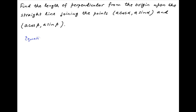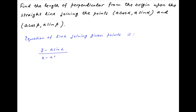The equation of the straight line joining the two given points can be written as y minus a·sin α divided by x minus a·cos α is equal to the gradient of the line, which equals a·sin β minus a·sin α divided by a·cos β minus a·cos α.